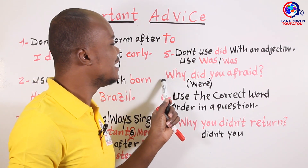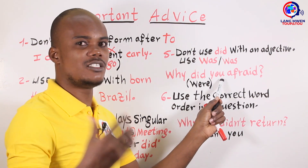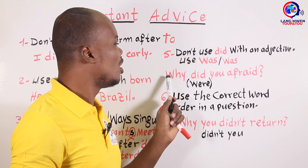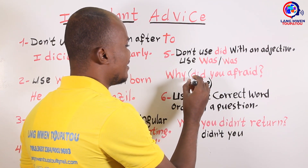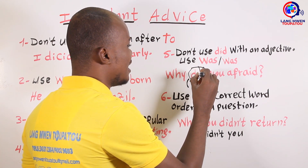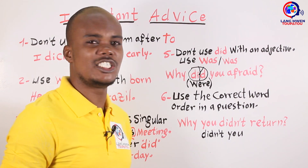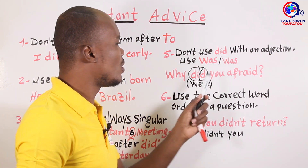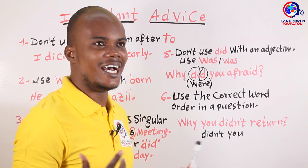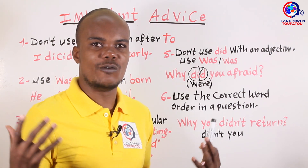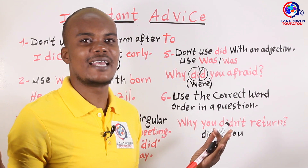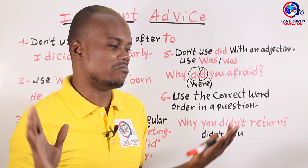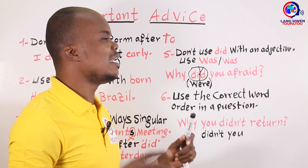For example, 'Why did you afraid?' — you cannot say that. You cannot use 'did' with an adjective. For a question, say 'was' or 'were' depending on the subject. With 'you,' say 'you were.' So say 'Why were you afraid?' — not 'Why did you afraid?' Do not say that, ladies and gentlemen. Use 'Why were you afraid?' This is the correct form. Your girlfriend can say to you: 'Why were you afraid when you saw my dad?' Use 'did' is not okay here.